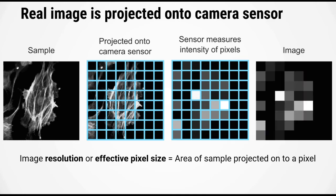By definition, the image resolution, or sometimes called the effective pixel size, is the area of the sample that is projected onto a single pixel. In other words, it is the area of the sample that is imaged by a single pixel on the camera.